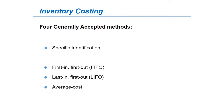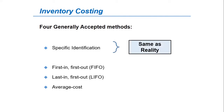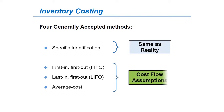Specific identification is the actual physical flow costing method in which items still in inventory are specifically costed to arrive at the total cost of ending inventory. Because specific identification is often impractical, other flow methods are permitted. These differ from specific identification in that they assume a flow of costs that may be unrelated to the physical flow of goods.